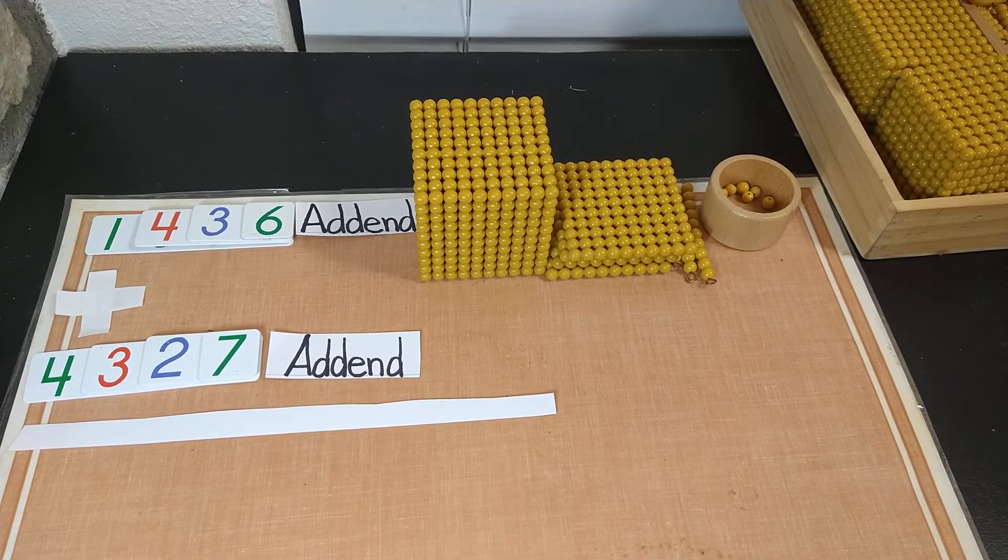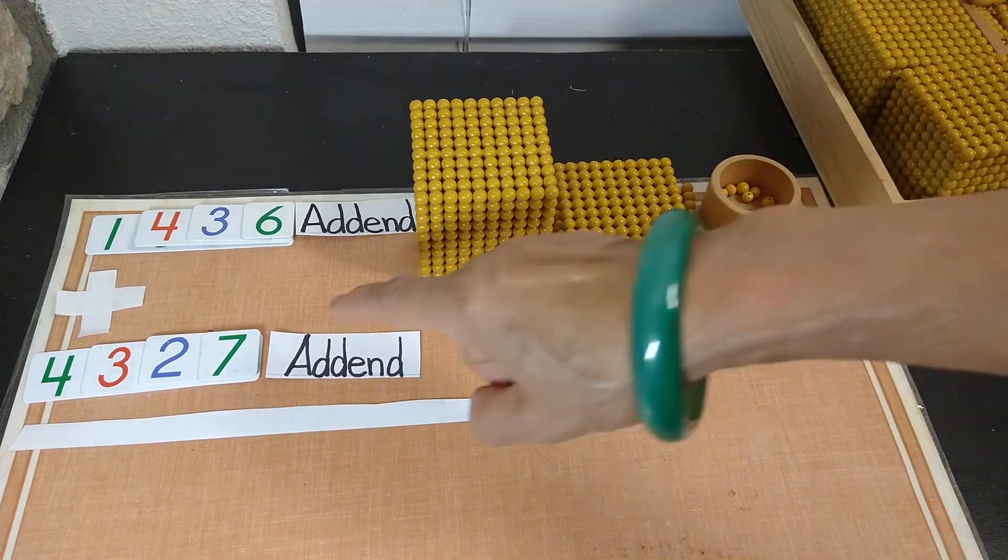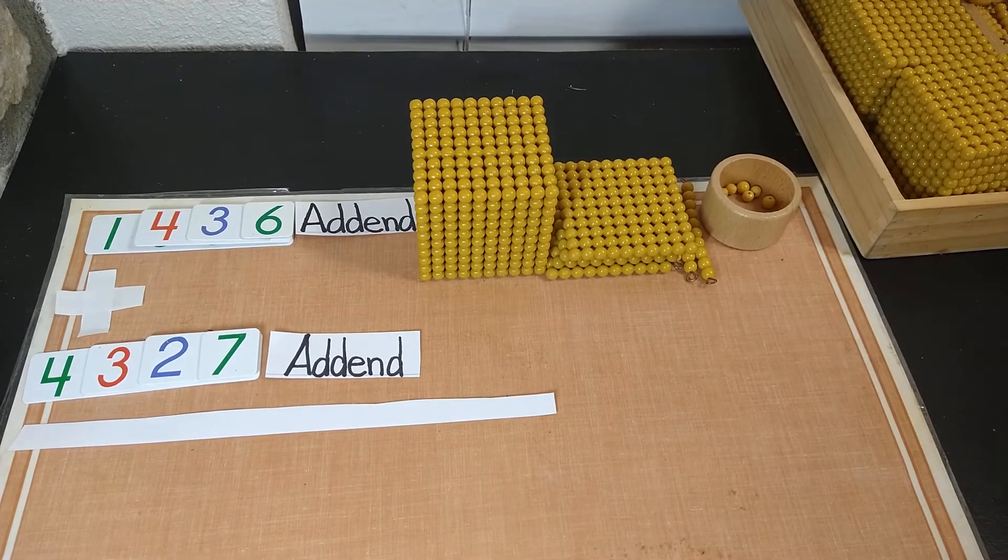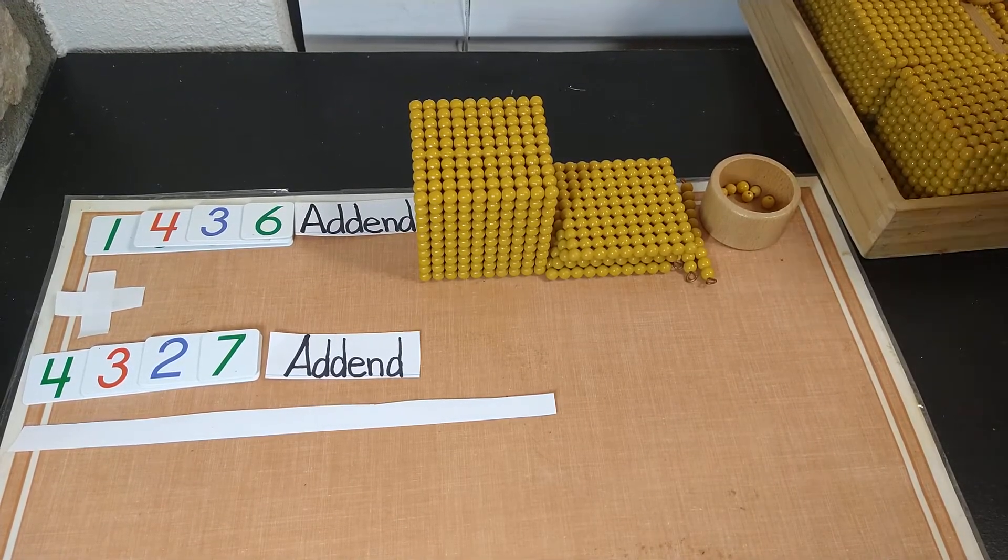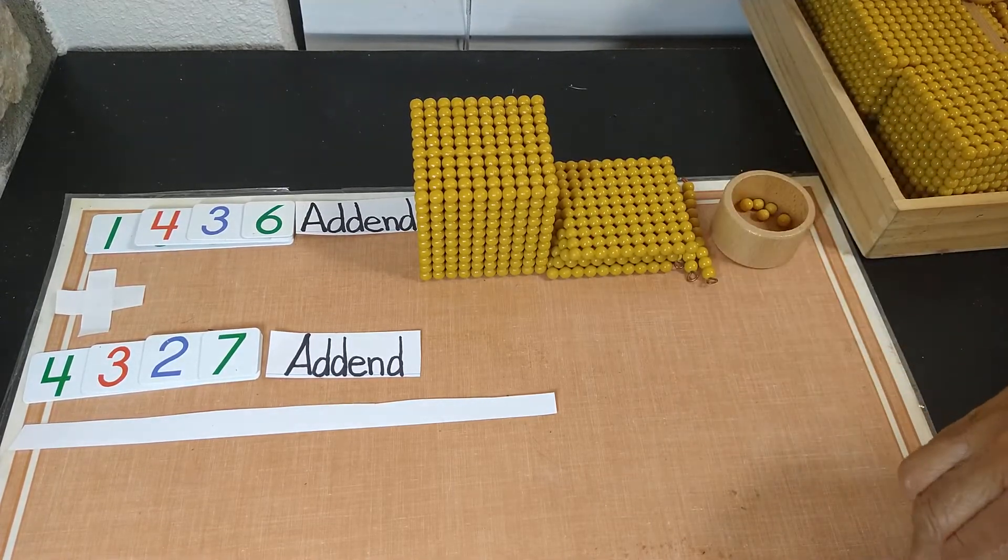So in the second addend, how many units do we have? We have 7 units. So let's get 7 units. So I don't have something like that. So I'm going to place over here,